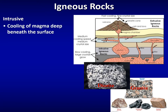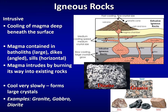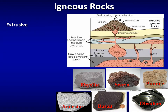Intrusive igneous rocks form from the cooling of magma deep beneath the Earth's surface — note the batholiths, plutons, dykes, sills, and laccoliths pictured here. When magma doesn't make it to the surface, it cools very slowly, giving it time to form large crystals in the rock matrix. Examples include granite, diorite, and gabbro. The crystals are about the size of a pencil eraser — small, but visible and identifiable.